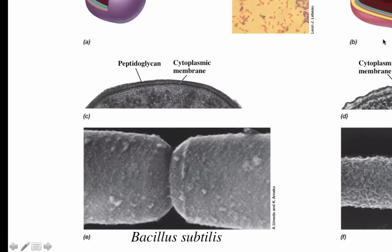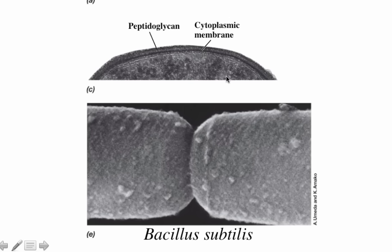From this transmission electron micrograph, in the gram-positive bacteria you can observe the cytoplasmic membrane together with a very thick structure of peptidoglycan. When you do a scanning electron micrograph of a gram-positive bacteria, like Bacillus subtilis, you can notice that the bacteria is very smooth, because the gram-positive cell wall is mainly made of peptidoglycan, which is very uniform.